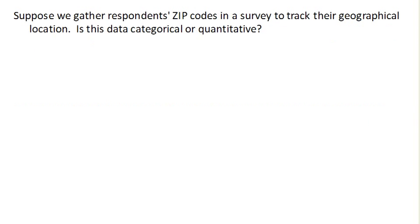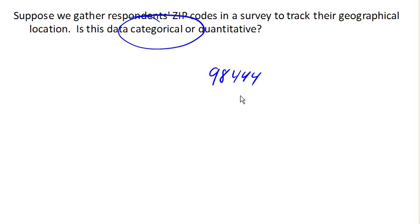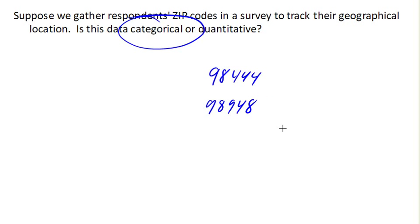Suppose we gathered a bunch of zip codes in a survey to track geographic location. Is that data categorical or quantitative? Even though zip codes are numerical, this data is categorical. Because if your zip code is 98444 and my zip code is 98498, it would make no sense at all to add those — it wouldn't mean anything. So even though these are numerical, they are just categorical data.